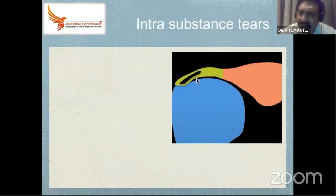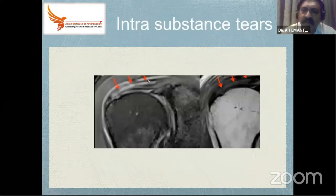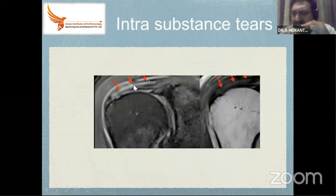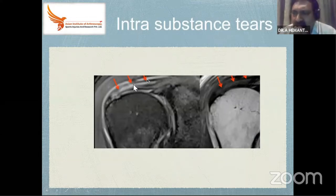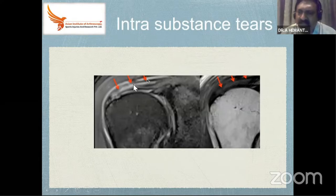How incomplete tears look: this is an intra-substance tear — in a classical intra-substance tear, between the two layers there will be fluid. The visual images give a lot of information. The partial bursal surface tear and how we can correlate it on MRI — this is how it looks on MRI. Then there is the partial articular surface tear as well.